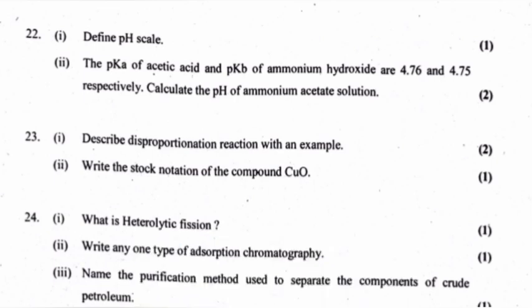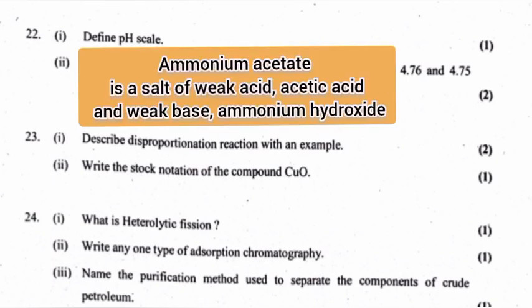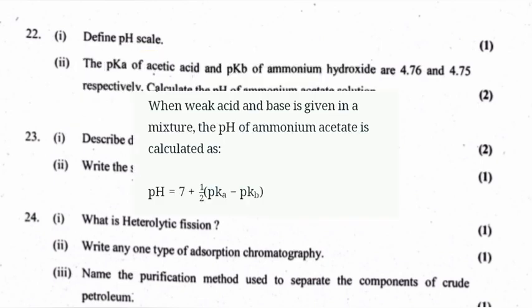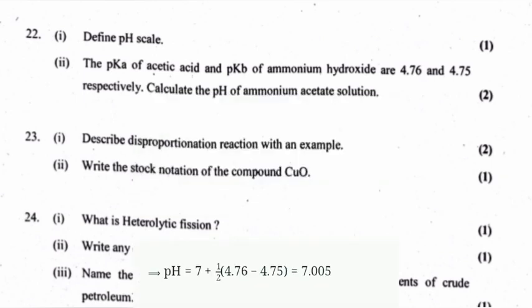The pKa of acetic acid and pKb of ammonium hydroxide are 4.76 and 4.75 respectively. Calculate the pH of ammonium acetate solution. Ammonium acetate is the salt of weak acid acetic acid and weak base ammonium hydroxide. The pH of ammonium acetate is calculated as pH = 7 + ½(pKa − pKb). Substituting values, the answer is 7.005.